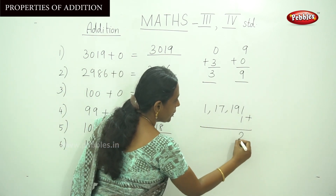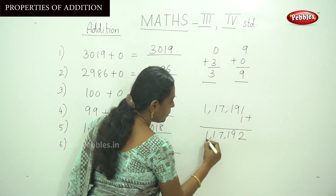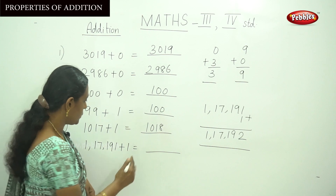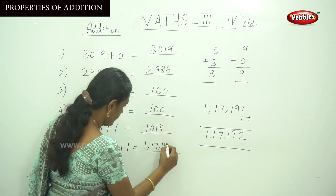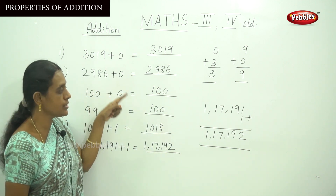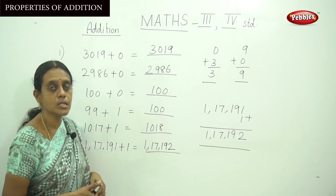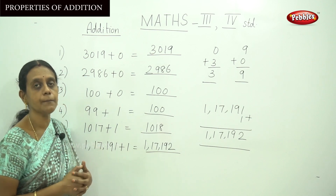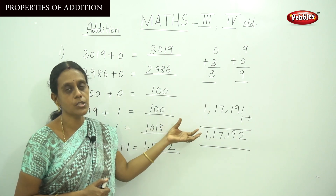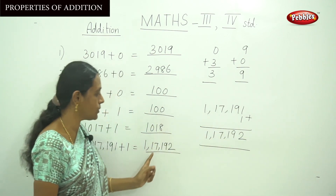When you add 1 to 117191: 1 plus 1 is 2, so the answer is 117192. This is the second property — when you add 1 to any number, the answer will be the successor of the given number. Successor means the after number. So if the number has more than 3 or 4 digits, add 1 and find the answer.